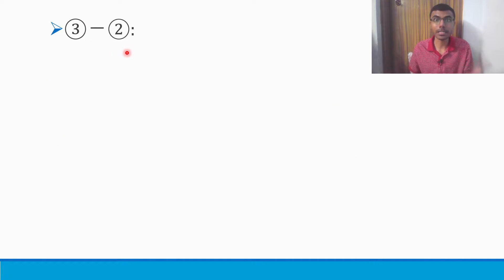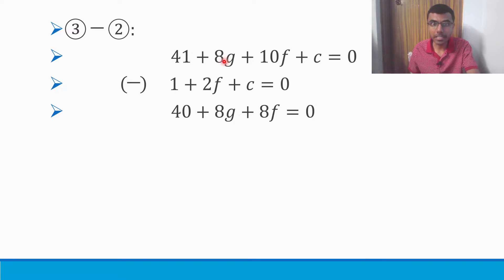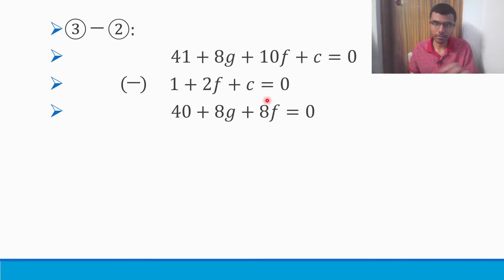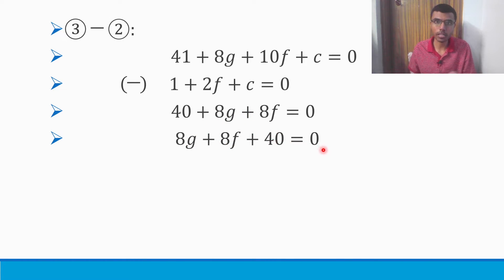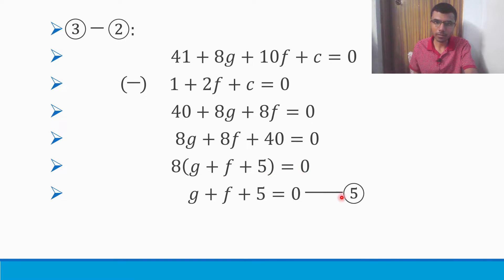I'm going to do equation 3 minus equation 2. 41 minus 1 is 40. 8G minus 0, so 8G comes as it is. 10F minus 2F gives 8F. C minus C is gone. So write it in standard form: 8G + 8F + 40 = 0. Take 8 common: G + F + 5 = 0. Mark it as equation 5.